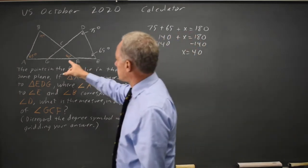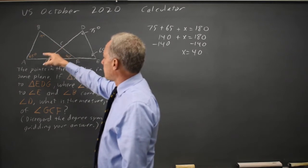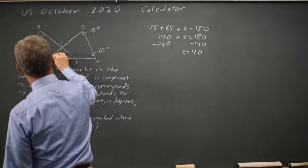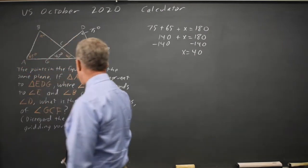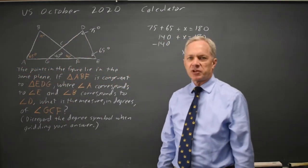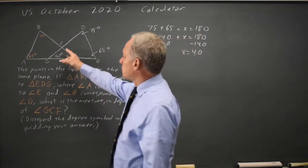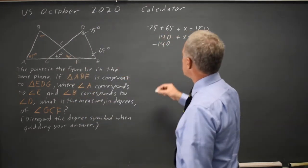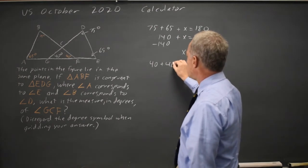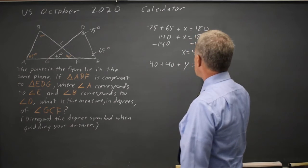Which we knew because this angle has to correspond to angle AFB, so this is 40 degrees. And the question is: what is the measure in degrees of angle GCF? Since triangle GCF also adds up to 180 degrees, 40 plus 40 plus — let's call it Y — equals 180.